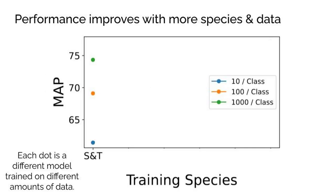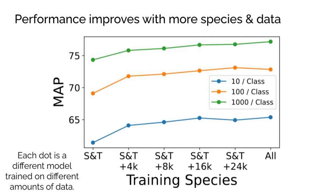We can also study the effect of joint learning across species. Here we show S&T results for a model trained on the 500 species in the S&T task only, with colors indicating different amounts of training data per species. As we add more species to the training set — including insects, mammals, plants, and other unrelated species — performance on the S&T species increases, yielding better models for the birds in the S&T task. The different colored lines also show that adding more training data per species produces significant improvements.